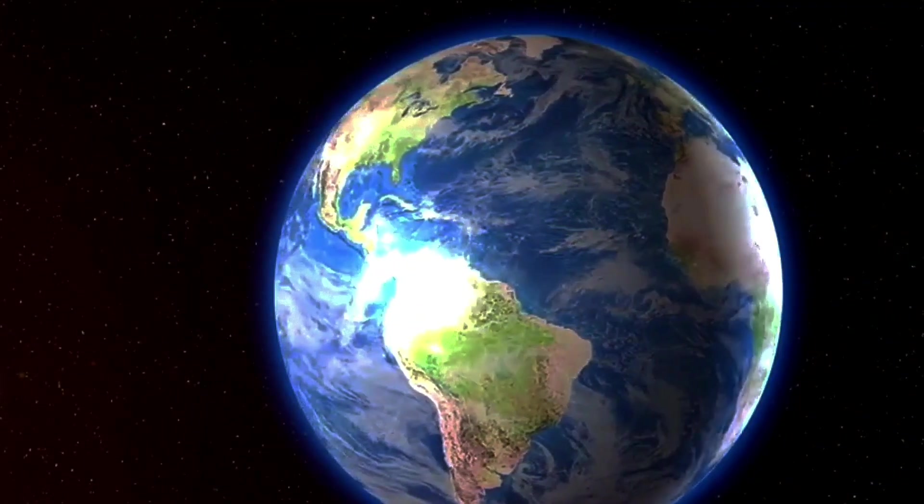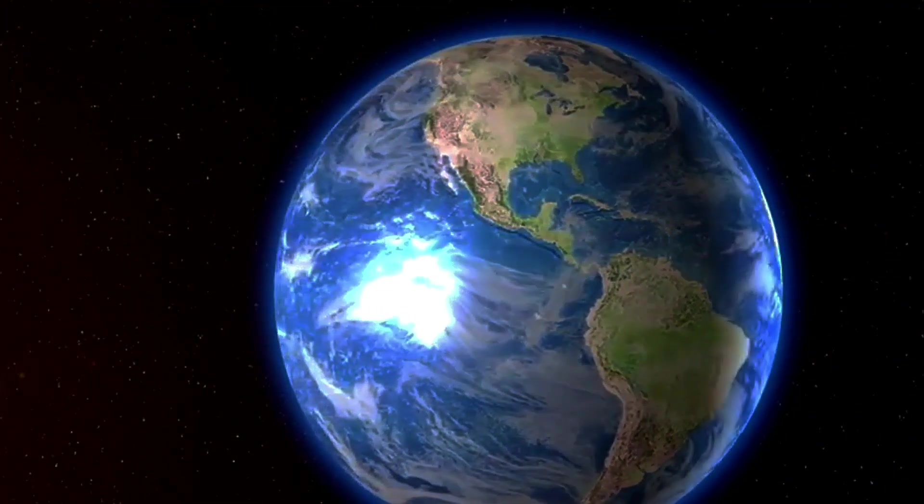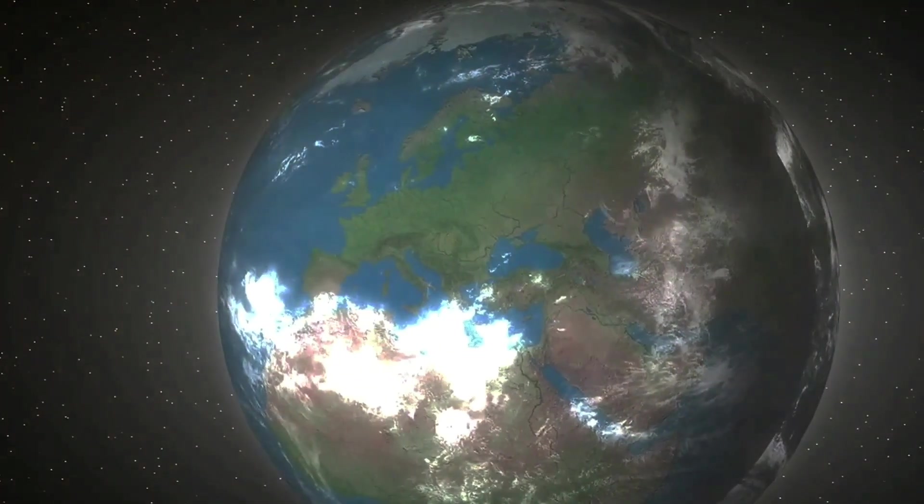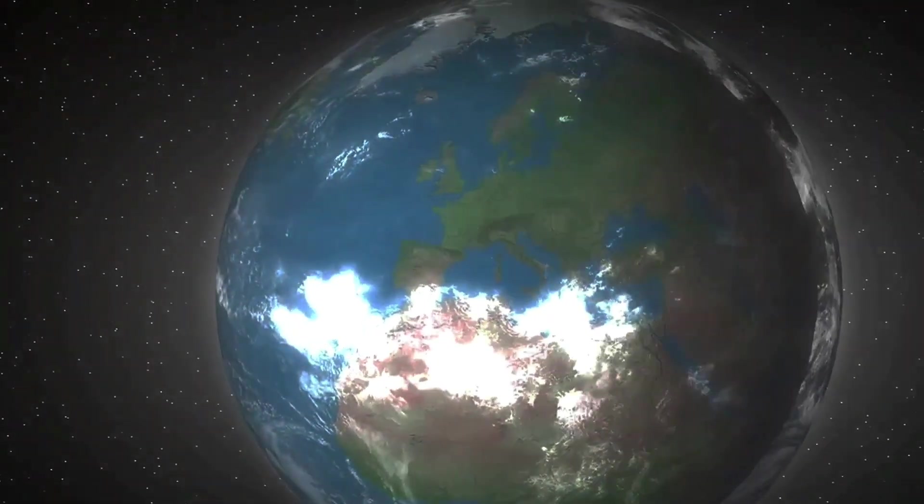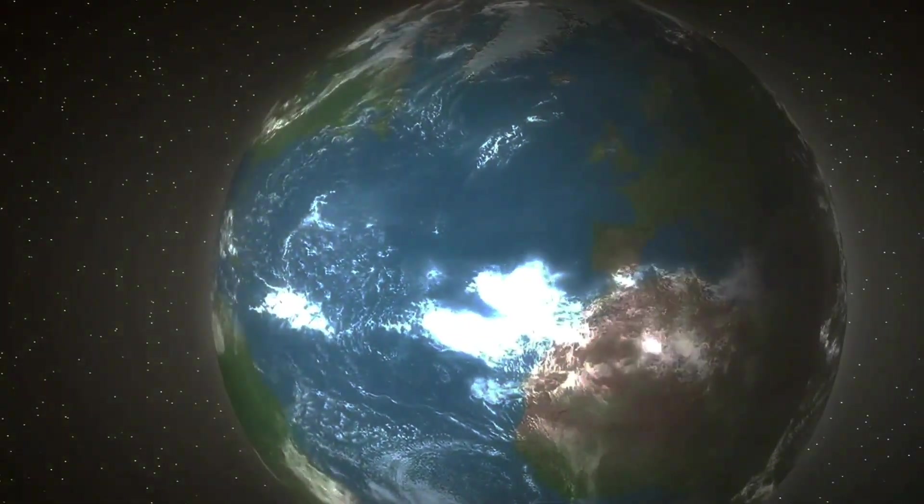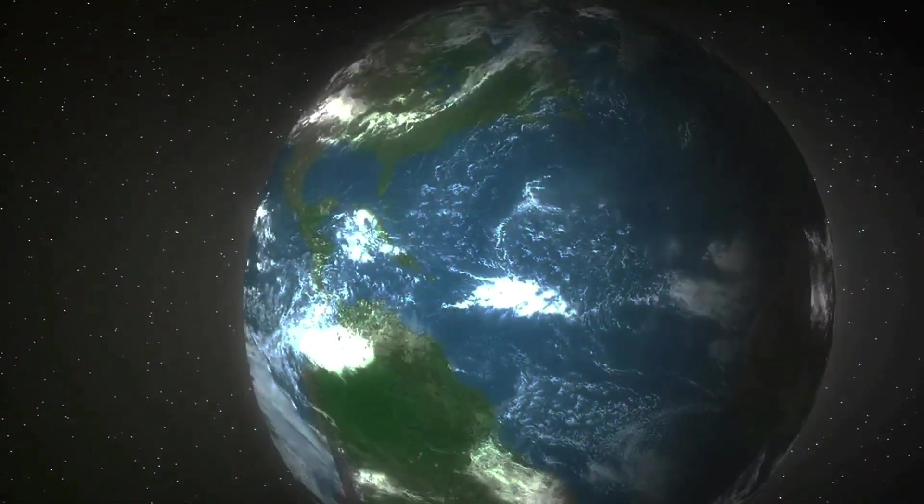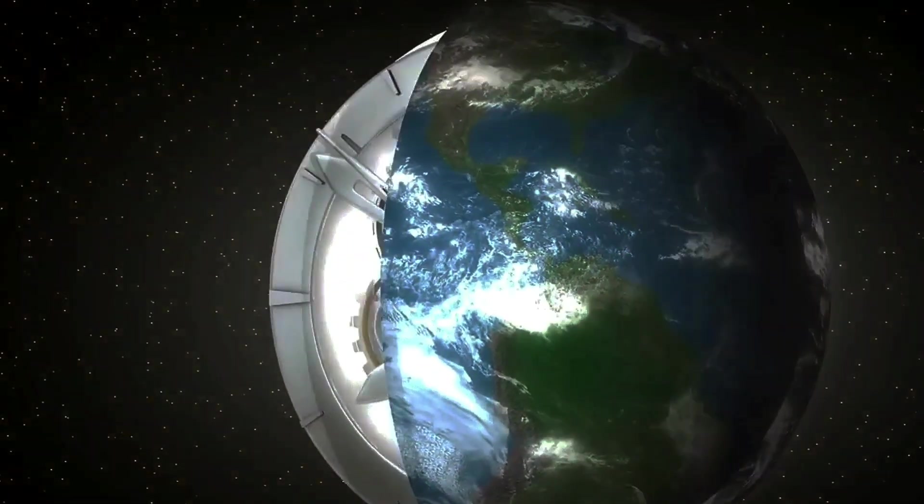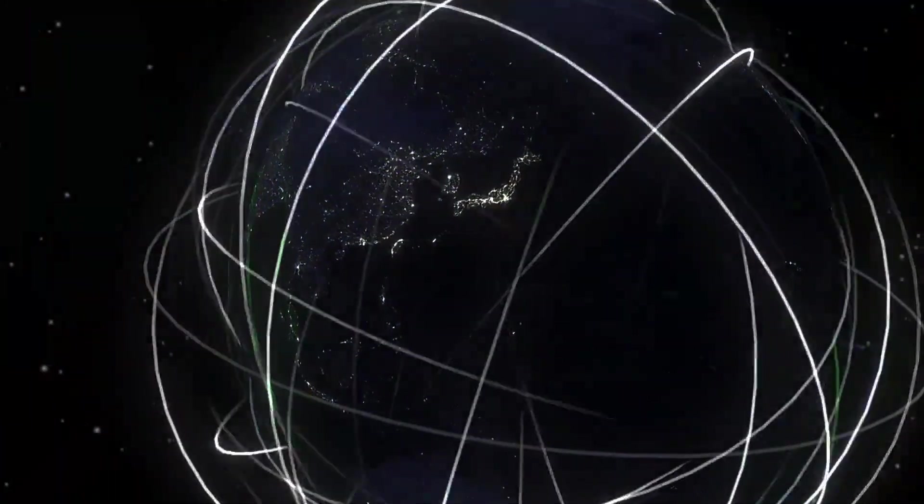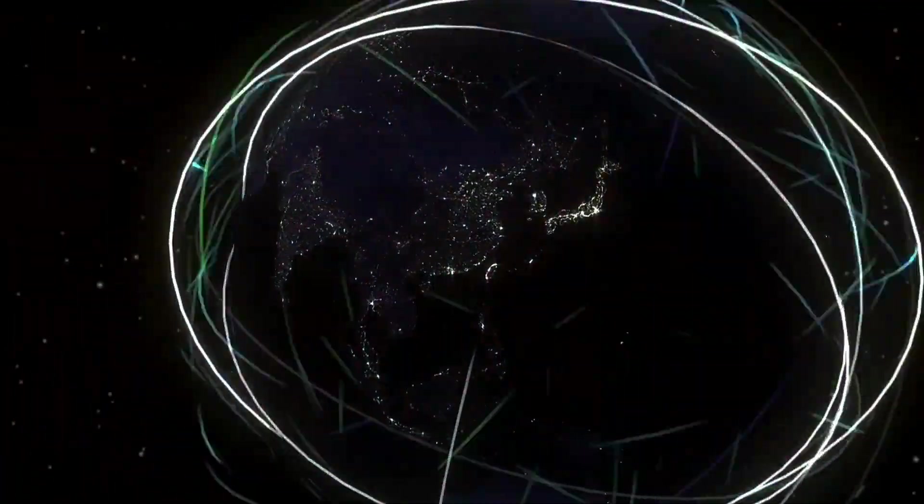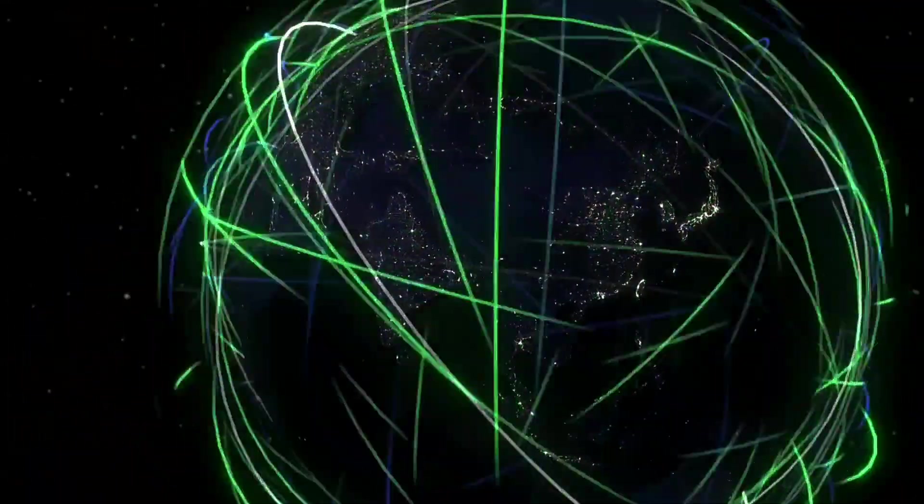Next, consider Earth's magnetic field. The inner core's movement is intricately linked to the geodynamo process in the outer core, which generates our planet's magnetic shield. While the magnetic field is primarily influenced by the outer core, any changes in the inner core's rotation could potentially affect the magnetic field's strength and the occurrence of geomagnetic reversals. Picture it as a grand cosmic ballet, where every dancer's move influences the whole performance.